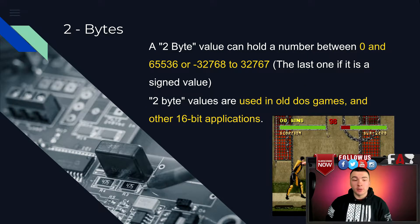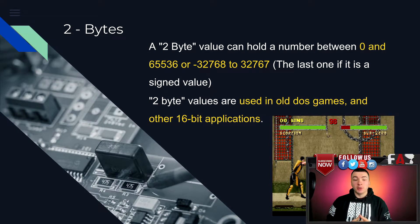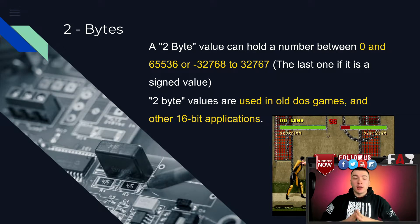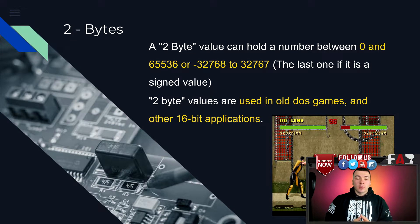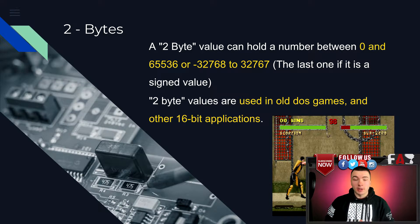The next scan type is the 2-byte scan, which is a value that can hold a number between 0 and 65,536. Or if it is a signed value, meaning it can go negative, it ranges from negative 32,768 to 32,767. You really won't use 2-byte scans much unless you're scanning old DOS games and other 16-bit applications.